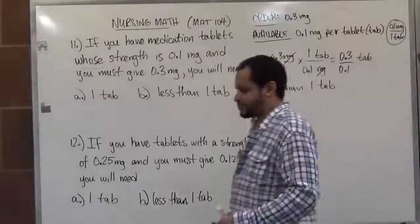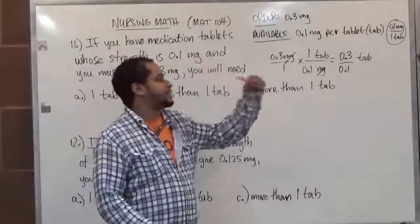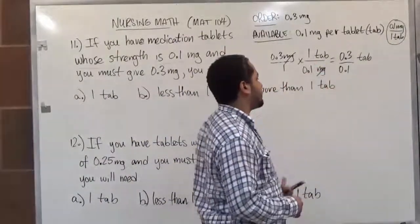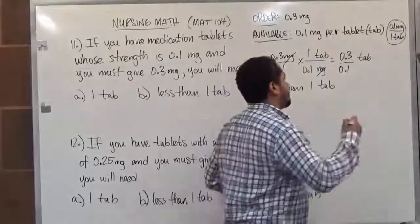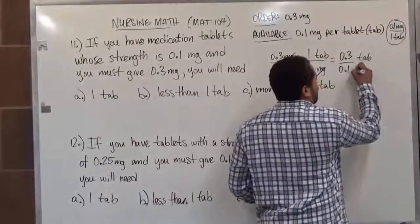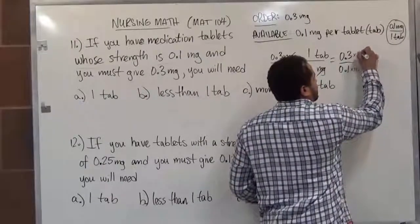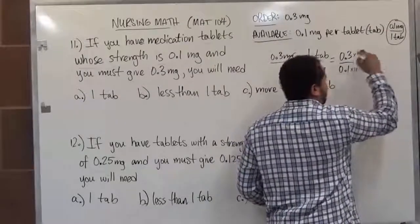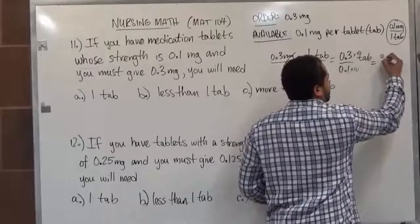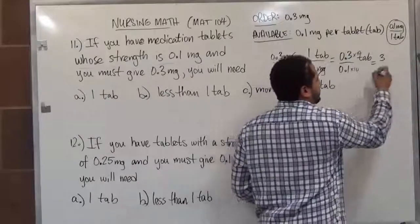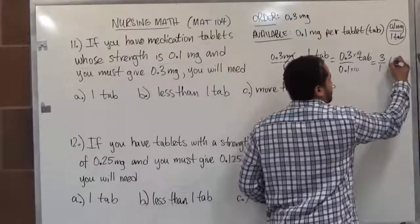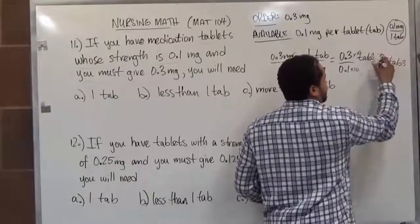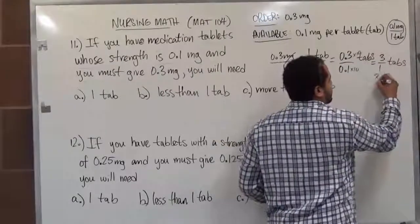We can't divide with a decimal in the denominator, so the next step is to multiply the top and bottom by 10 to eliminate the decimal. When we multiply top and bottom by 10, 0.3 times 10 gives us 3, and the decimal on the bottom also goes away, giving us 3 over 1. So this is just 3 tablets.